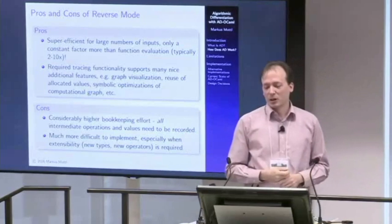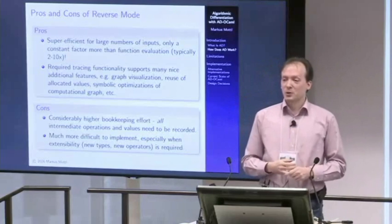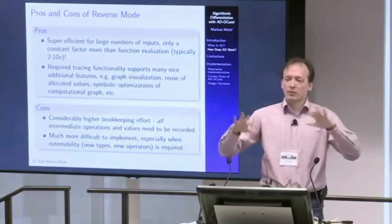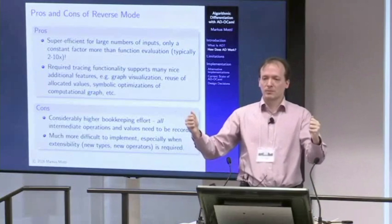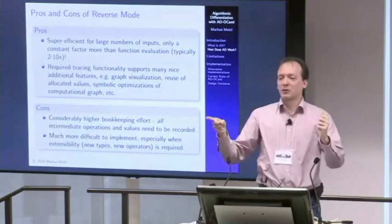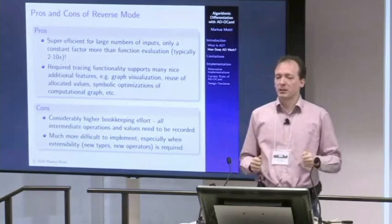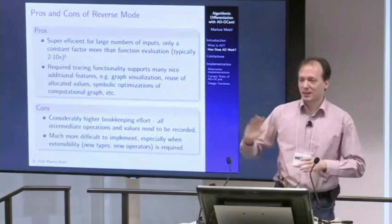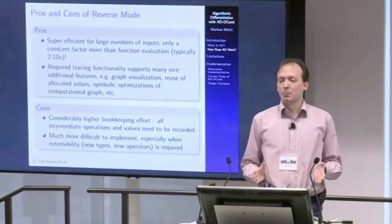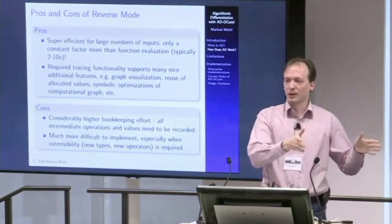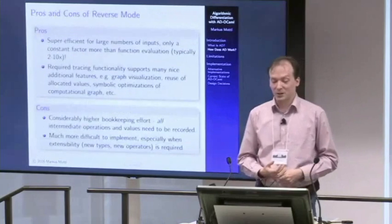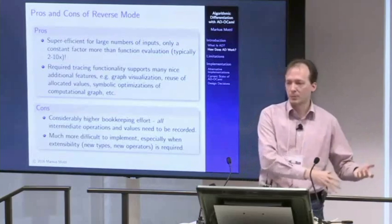You can also do graph rewriting and visualization. One very nice feature is reusing allocated values — with large matrices and vectors still in memory, you can go forward to compute results, then backward for derivatives, then forward again reusing all values. If well implemented, you can do almost everything with in-place operations in BLAS and LAPACK — highly optimized numerical libraries. There are examples where re-evaluating the trace is faster than running the plain program. The big downside is it's much more difficult to implement, especially with extensibility for new types or operators.